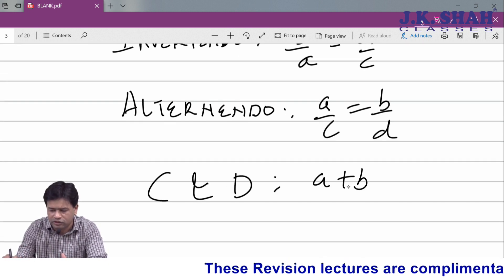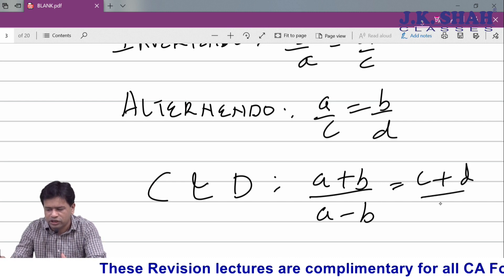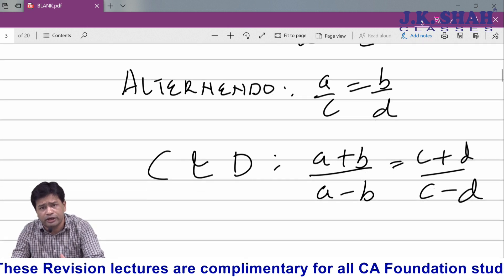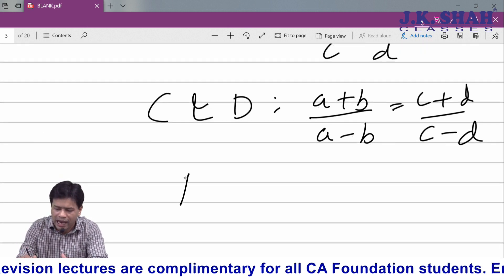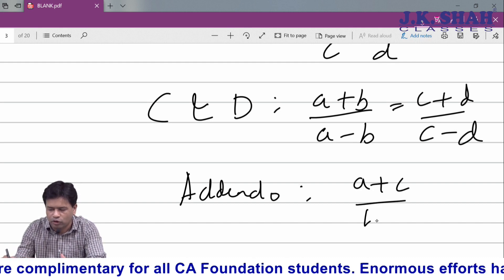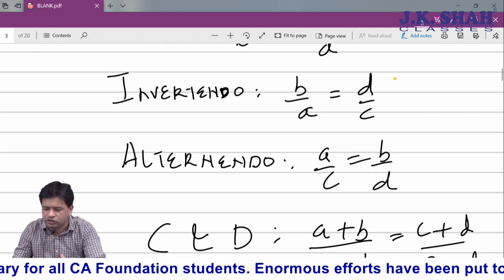Componendo means a plus b upon a minus b equals c plus d upon c minus d. This is a property of componendo and dividendo. Addendo means a plus c upon b plus d - so a upon b equals c upon d equals a plus c upon b plus d.